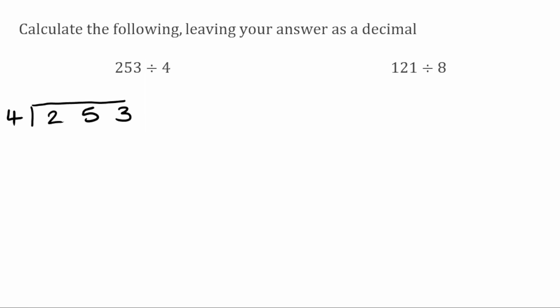We've now got 25. How many times does 4 fit into 25? That'll go six times, so I'm going to write a 6 above the 5, because 6 times 4 is 24. I write that down and take it away: 25 take away 24 leaves us with 1. Then we bring down the next digit.